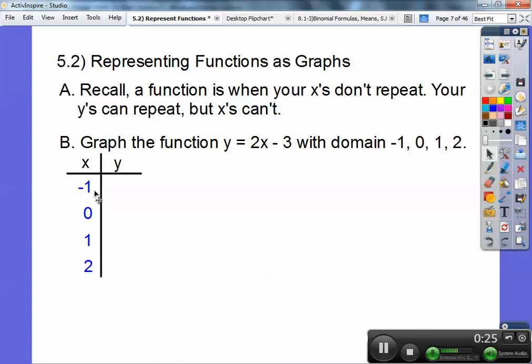And then I'm going to plug in these values into this. So I'm going to plug in negative 1 right there. 2 times negative 1 is negative 2, and then negative 2 minus 3 is negative 5. I'm going to plug in 0 next. So 2 times 0 is 0, 0 minus 3 is negative 3.